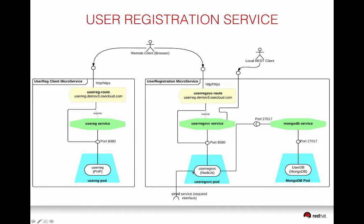The user registration service also has a required interface for the email service. When a user gets registered, it sends out an email confirming the job is done. The email service is generic — it doesn't care what kind of email it is sending, as long as it knows the address to send to. So the email service could be used by other services as well. Each microservice is doing just one job, and each is written in a different language.